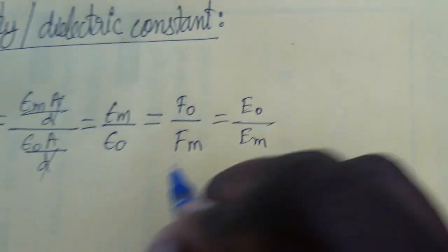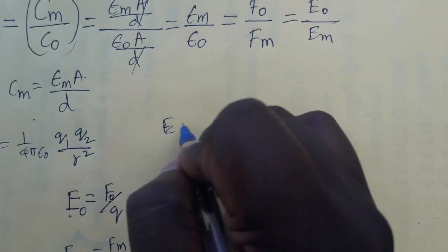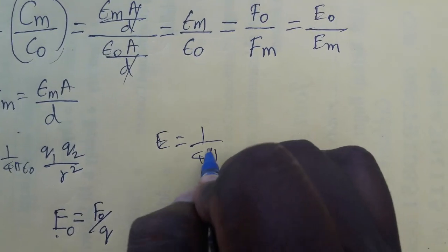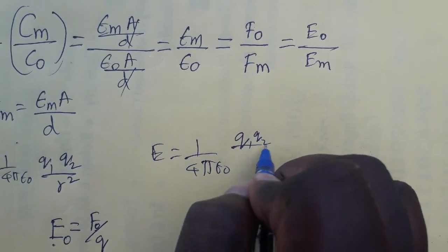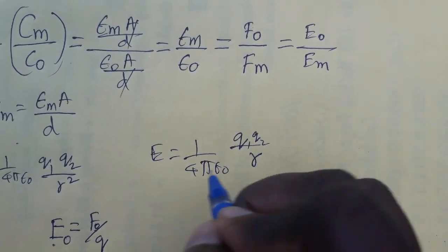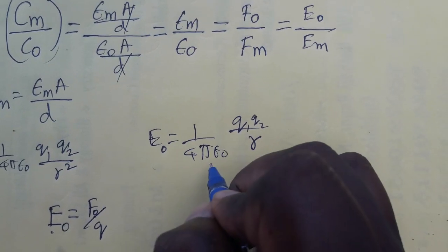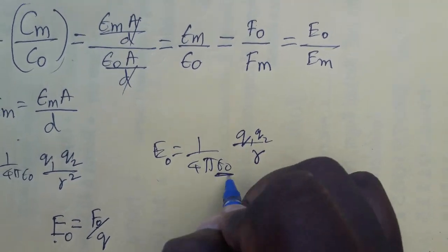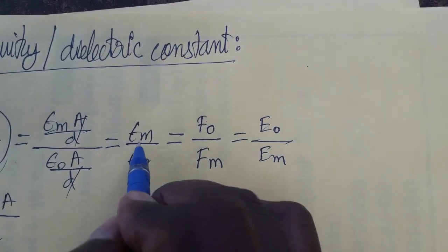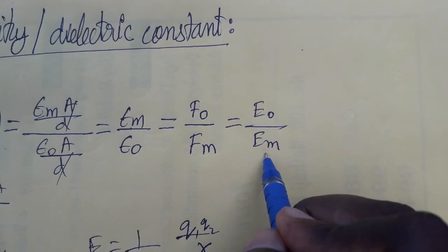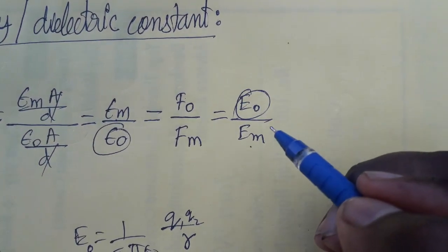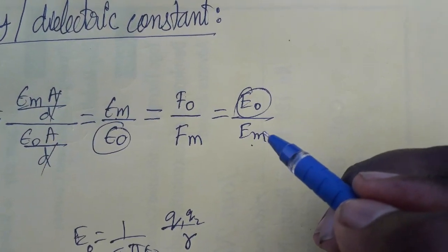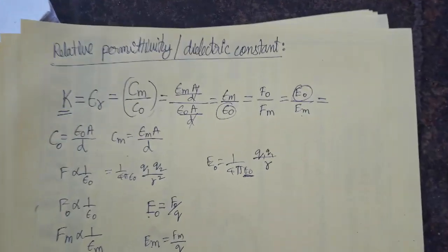Because E = (1 / 4πε₀) × (q / r²), E₀ is inversely proportional to ε₀, and Eₘ is inversely proportional to εₘ. So E₀ / Eₘ = εₘ / ε₀, confirming the relationship between electric field and permittivity.